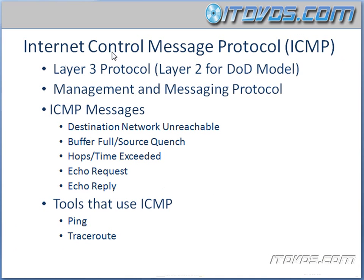The Internet Control Message Protocol, otherwise known as ICMP, is a Layer 3 protocol — Layer 3 on the OSI model — so it operates at the network layer. On the DOD model, it's Layer 2, the Internet layer. And ICMP is a Management and Messaging Protocol.